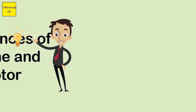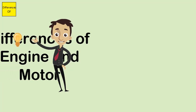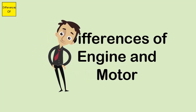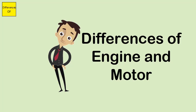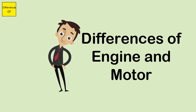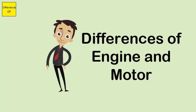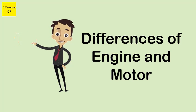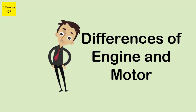Difference between engine and motor. An engine is a system or device that affects a result, while a motor is a thing which moves other things. An engine converts any form of energy to bring about a mechanical effect, whereas a motor converts electrical energy to mechanical energy.